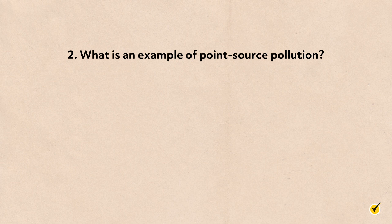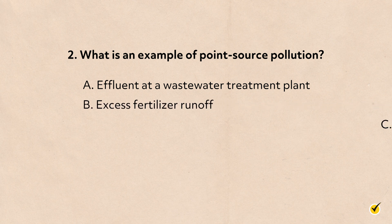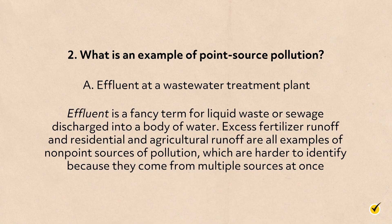Number 2: What is an example of point source pollution? A. Effluent at a wastewater treatment plant, B. Excess fertilizer runoff, C. Residential runoff, or D. Agricultural runoff? The correct answer is A. Effluent is a fancy term for liquid waste or sewage discharged into a body of water. Excess fertilizer runoff and residential and agricultural runoff are all examples of non-point sources of pollution, which are harder to identify because they come from multiple sources at once.